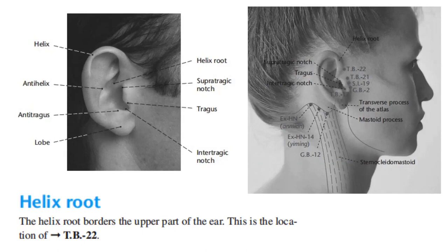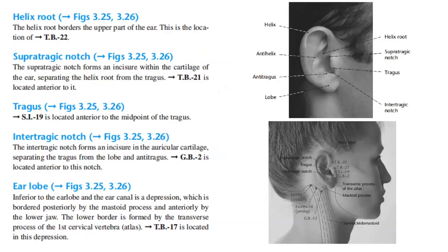The helix root borders the upper part of the ear and is the location of Triple Burner 22. Next, we have the supratragic notch, which forms an incisure within the cartilage of the ear, separating the helix root from the tragus. Triple Burner 21 is located anterior to the supratragic notch.